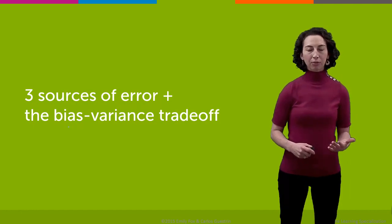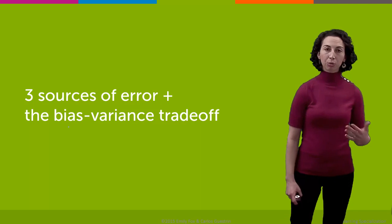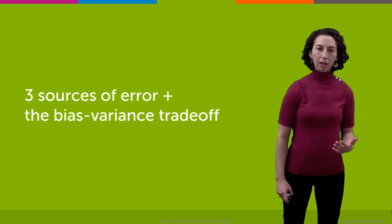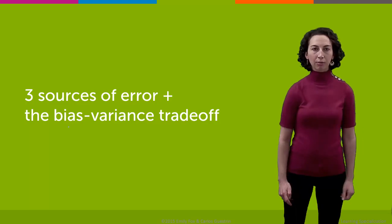Okay, so we've talked about three different measures of error, and now in this part, we're going to talk about three different sources of error. And this is going to lead us into a conversation of the bias-variance tradeoff.